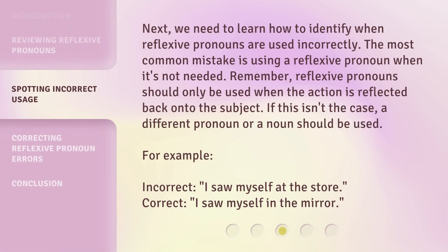Next, we need to learn how to identify when reflexive pronouns are used incorrectly. The most common mistake is using a reflexive pronoun when it's not needed. Remember, reflexive pronouns should only be used when the action is reflected back onto the subject. If this isn't the case, a different pronoun or a noun should be used. For example — Incorrect: 'I saw myself at the store.' Correct: 'I saw myself in the mirror.'